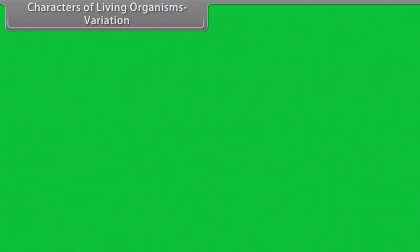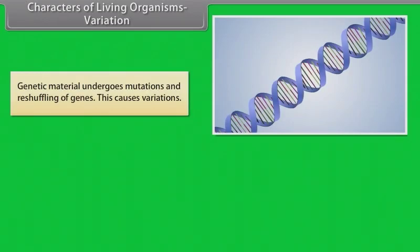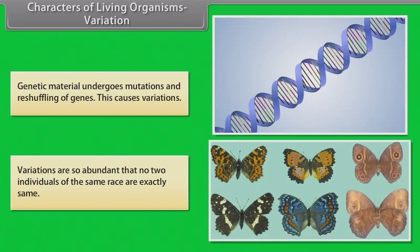Genetic material undergoes mutations and reshuffling of genes. This causes variations. Variations are so abundant that no two individuals of the same race are exactly same.